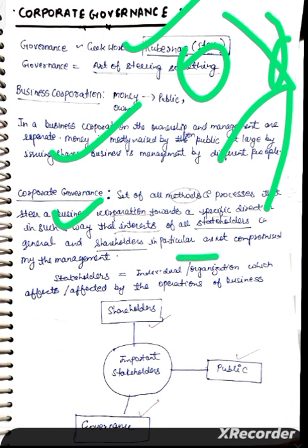The interests of shareholders are not compromised by the management. It should not be like that — that management can compromise shareholders' interests. Things have to be done properly, and that is what corporate governance will ensure.